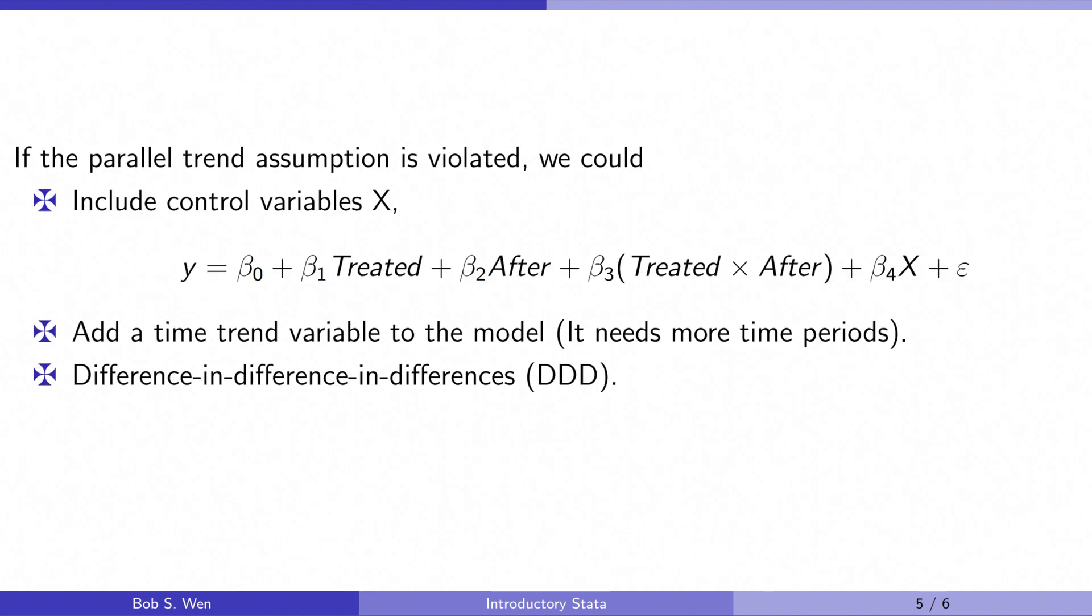What if the assumption is violated? That is, the groups are not similar. We have some methods to address this problem. We can include other observable control variables in the model. In this framework, the model has one more vector X representing the control variables. The control variables account for the differences in the observable characteristics between the two groups. We hope that after partialing out the effects of these control factors, the residual outcome satisfies the parallel trend assumption. The results will become more robust and causal in this way.